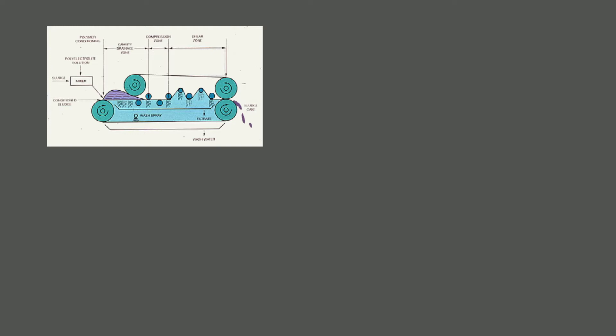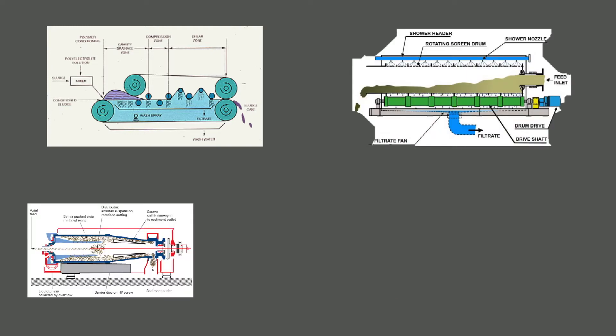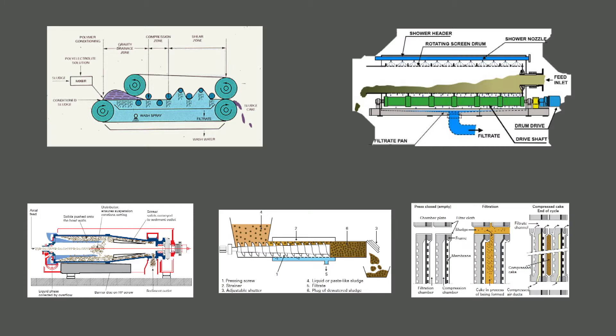A variety of technologies exist to thicken or dewater the sludges. These include but aren't limited to gravity belt thickeners, drum thickeners, centrifuges, screw presses and sludge presses. Each of these have their own individual advantages and disadvantages.